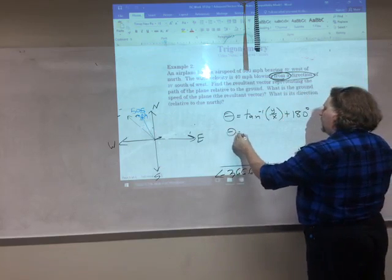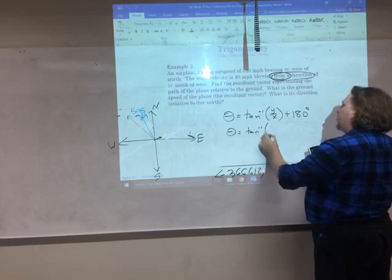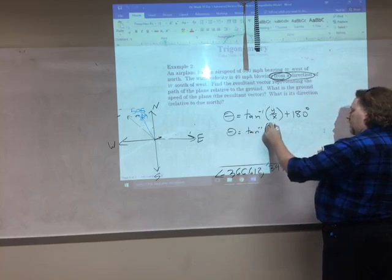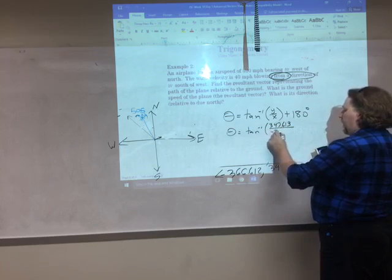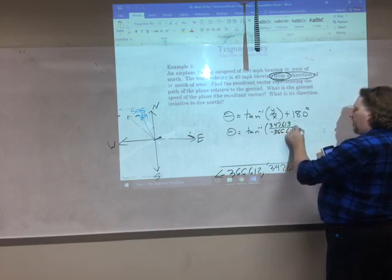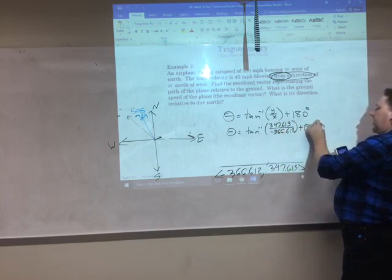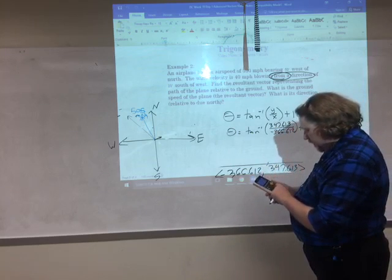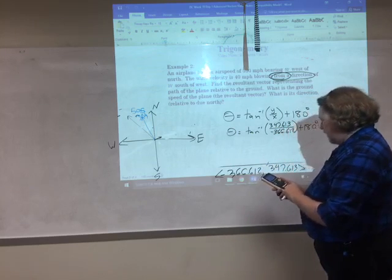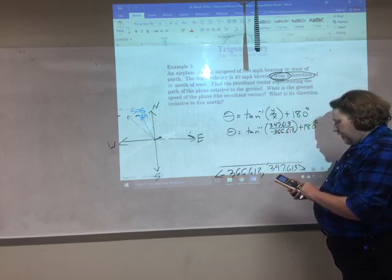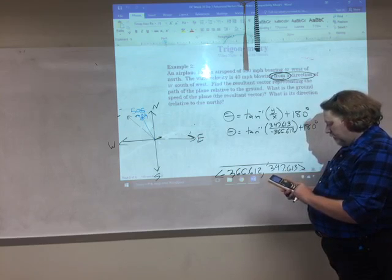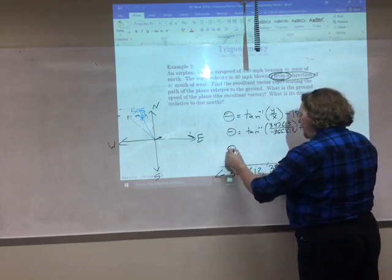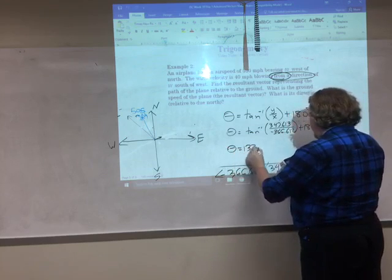So, my angle is the tangent inverse of 347.613 over negative 366.612 plus 180 degrees. To the calculator we go. Arc tangent, negative 366.612, divide 347.613, and add 180 degrees. And I get that my direction angle is 133 degrees.